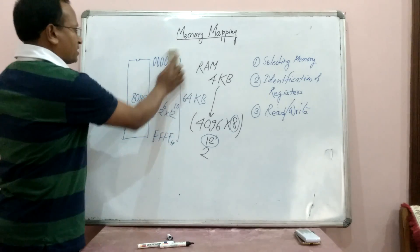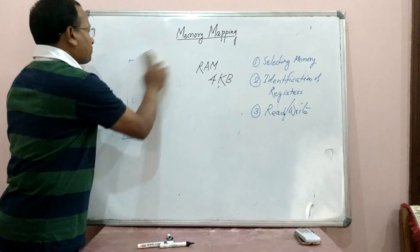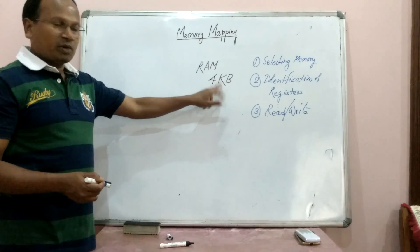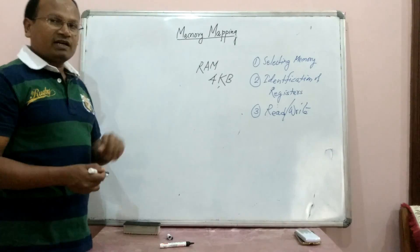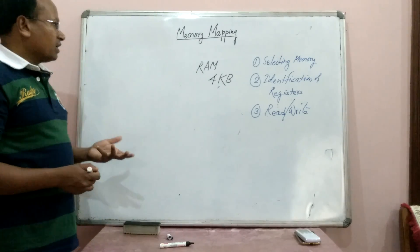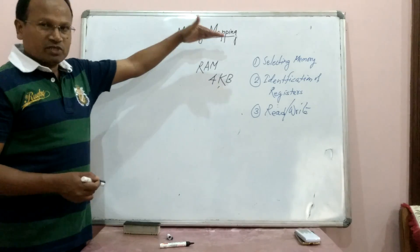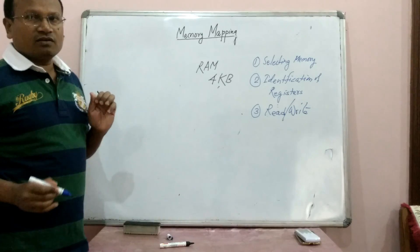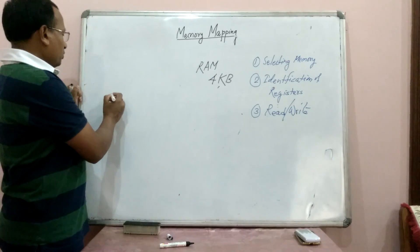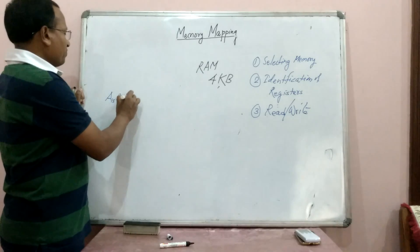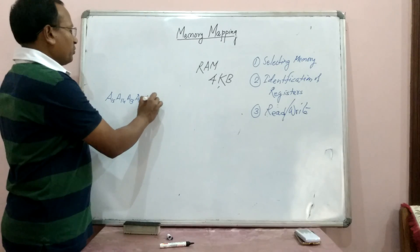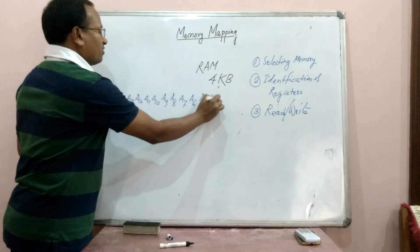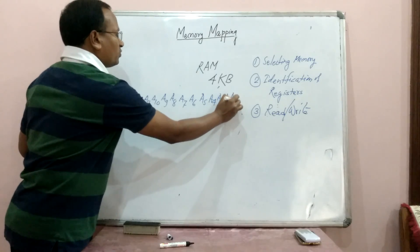Now how do we allocate this memory space? The memory capacity of this RAM is 4KB, meaning 4096 registers and 12 address lines. In the beginning address, all lines A0 to A11 will be 0. For the final memory address, all lines will become 1. Writing out all 16 address lines of the microprocessor: A15, A14, A13, A12, A11, A10, A9, A8, A7, A6, A5, A4, A3, A2, A1, and A0.